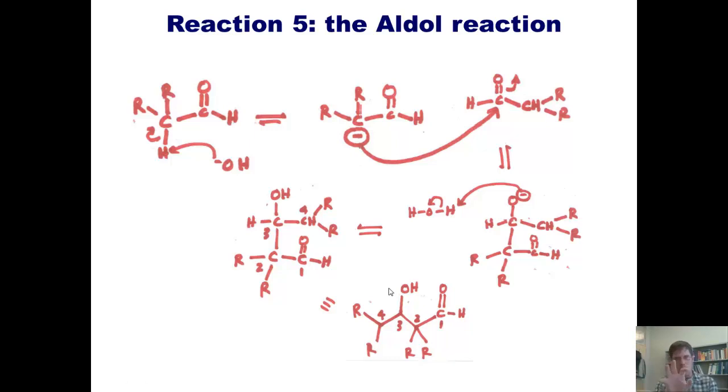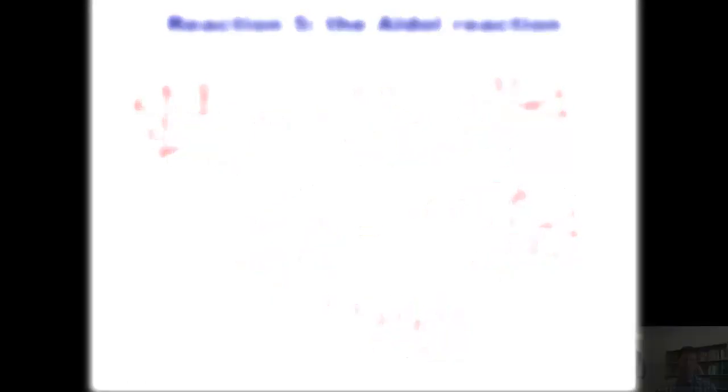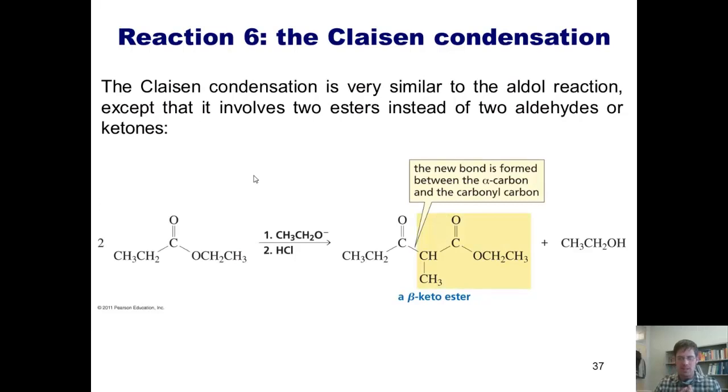The Claisen condensation is very similar to the aldol reaction, except that it involves two esters instead of two aldehydes or ketones. The product also looks very similar to an aldol product, except that it has a beta ketone instead of a beta alcohol.